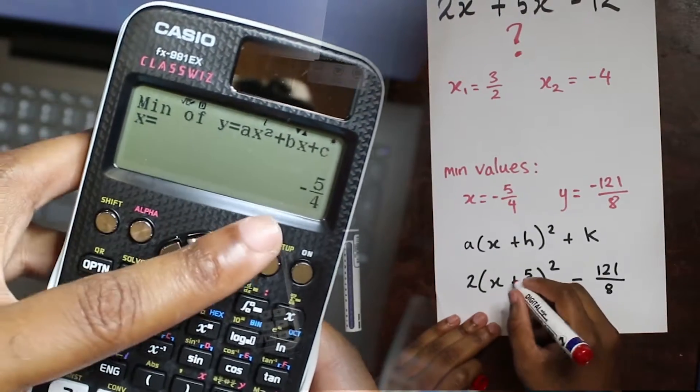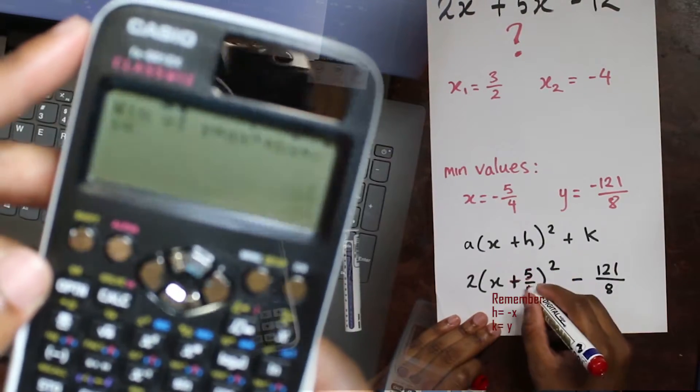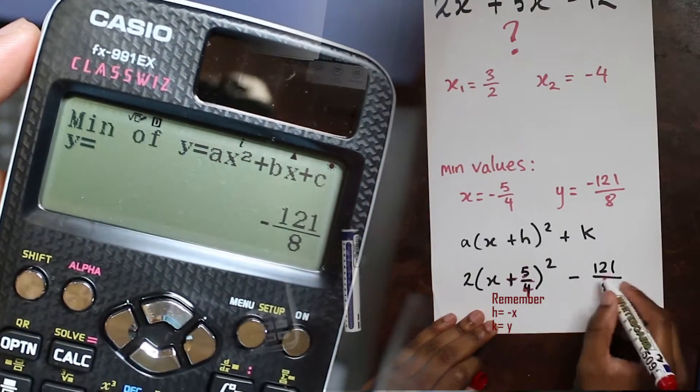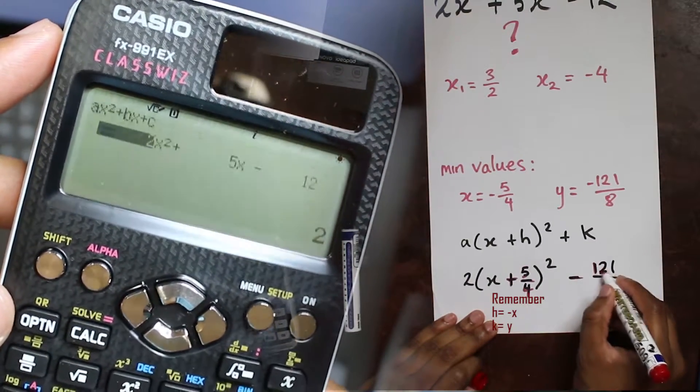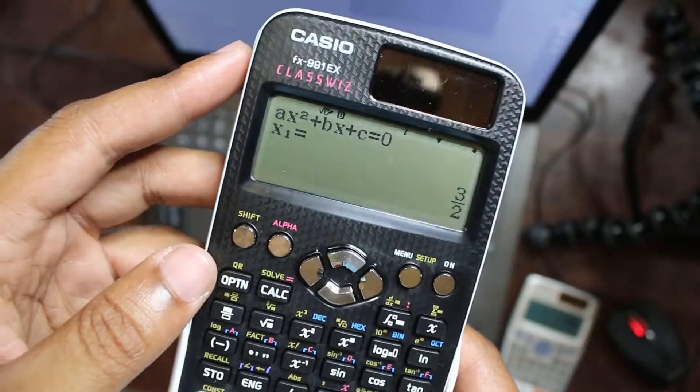What's even more useful is that it goes on to give me the minimum, the coordinates of the minimum point. So you can use this to complete the square: negative 5 over 4, and the y coordinate is negative 121 over 8. If I press enter again it'll take me back there.